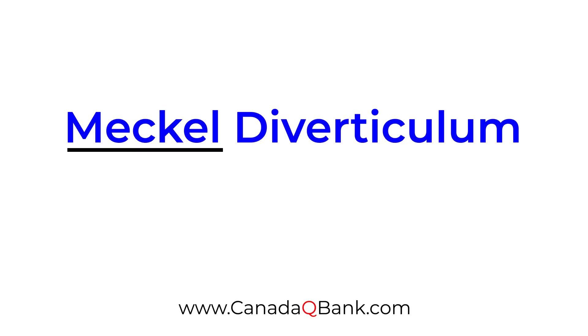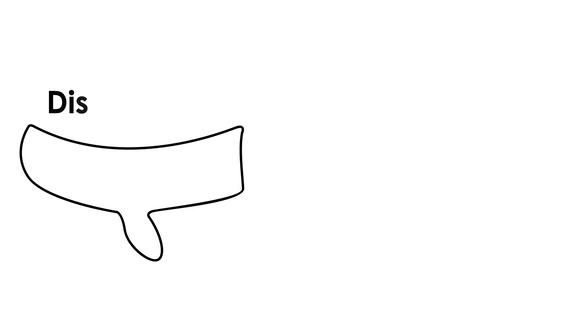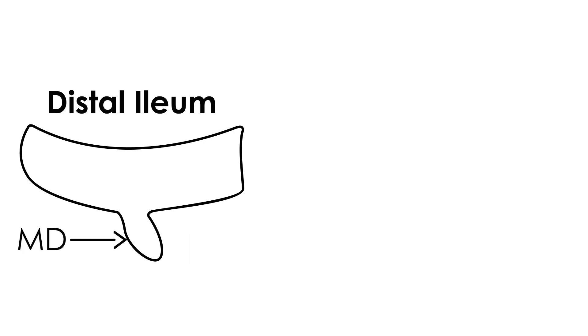Meckel's diverticulum is the topic, abbreviated MD in this video. Meckel's diverticulum happens embryologically and is essentially a diverticulum that occurs in the distal ileum. It happens in about 2% of the population as this congenital sacculation in the distal ileum.